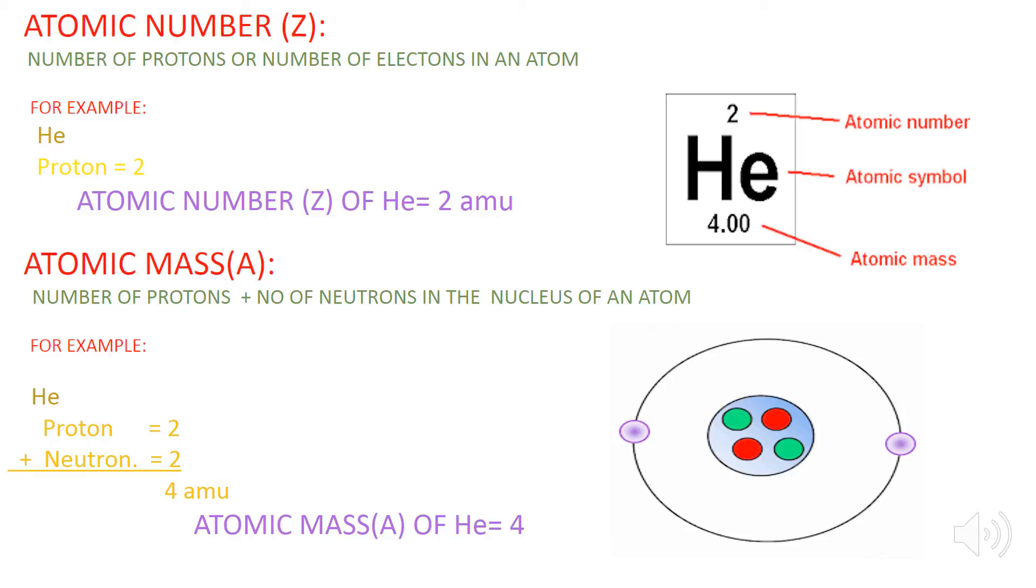Atomic mass is also known as mass number or the nucleon number. It is the number of the protons plus the number of the neutrons present inside the nucleus of the atom.